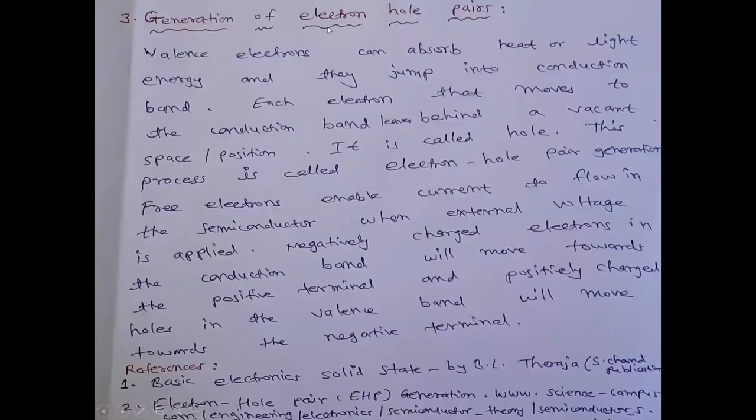Now we will see generation of electron hole pairs. Valence electrons can absorb heat or light energy and they jump into conduction band. Each electron that moves to conduction band leaves behind a vacant space or position, it is called hole. It is positively charged. And this process is called electron hole generation.